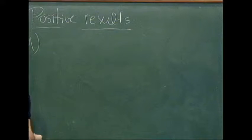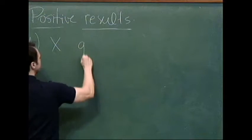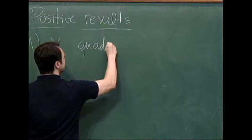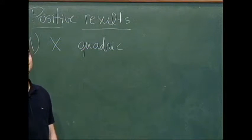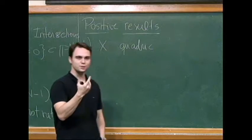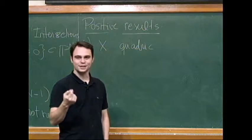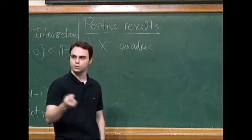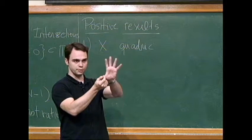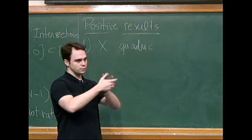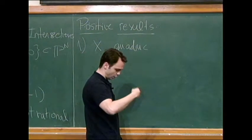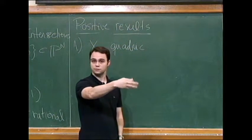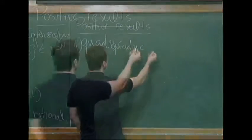So one example of a positive result is when X is a quadric, that is a hypersurface of degree two. Then you can take a point in the quadric. I'm thinking of a field which is algebraically closed, or at least assuming that the quadric has a point. As soon as it has a point, you can project from the point, and this will give you a birational equivalence with a projective space of the same dimension. So quadrics are rational.